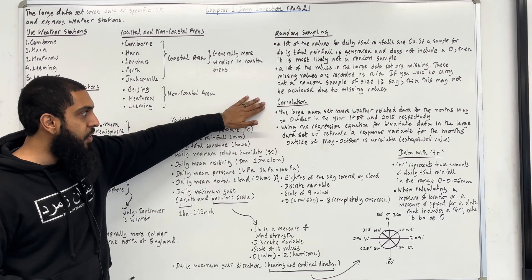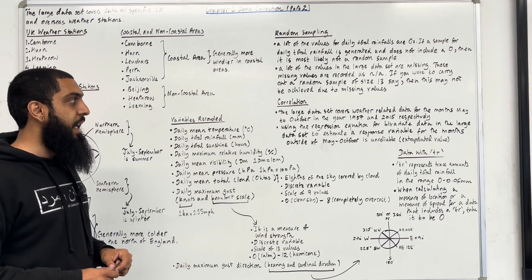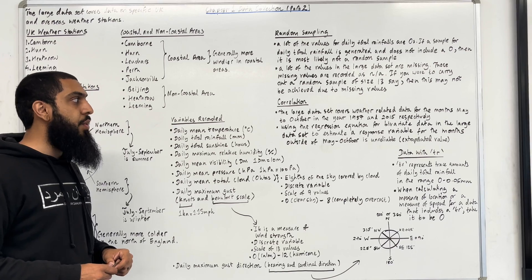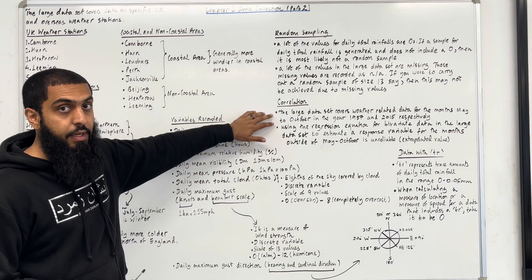Moving on to correlation. The large data set covers weather-related data for the months May to October in the year 1987 and 2015, respectively. That is a very important fact about the large data set.